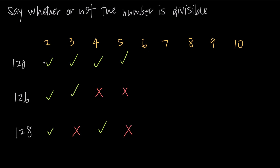Since the divisibility rules for 2 and 3 are quick, we use those as tests to figure out whether a number is divisible by 6. If the number is divisible by both 2 and 3, then it's also divisible by 6. Since 120 is divisible by both 2 and 3, it's also divisible by 6. Since 126 is divisible by both 2 and 3, it's also divisible by 6. However, since 128 is divisible by 2 but not by 3, it's not going to be divisible by 6.